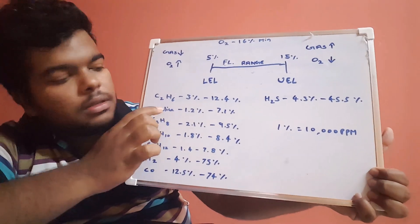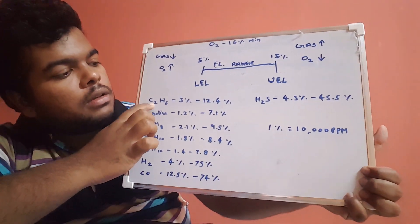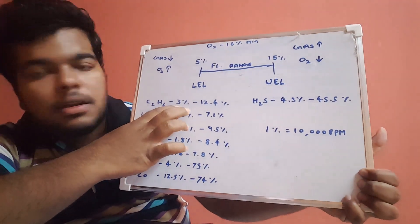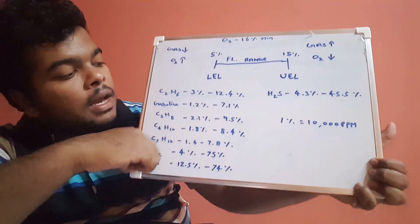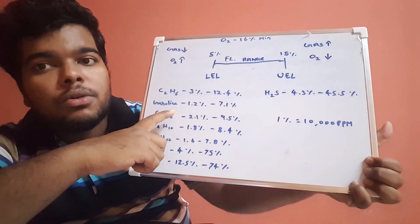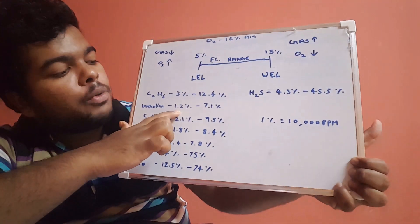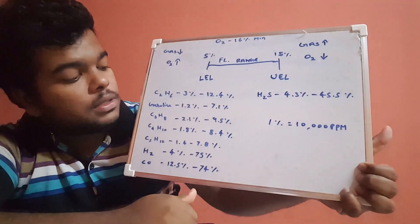Apart from this, ethane, C2H6, has 3 percentage LEL and 12.4 percentage UEL. Gasoline, which is petrol, has 1.2 percentage to 7.1 percentage.